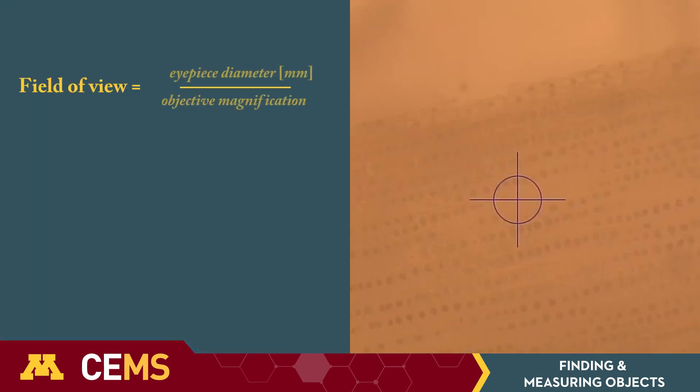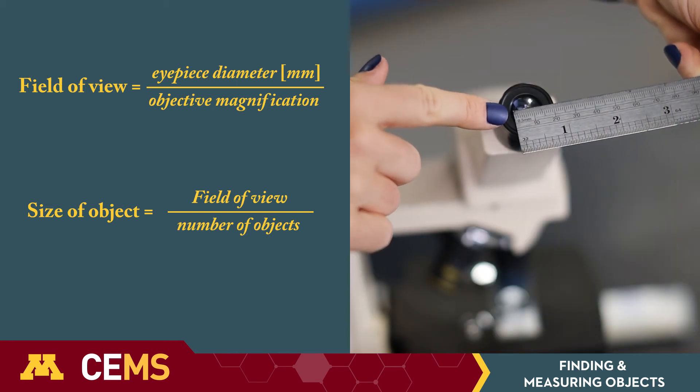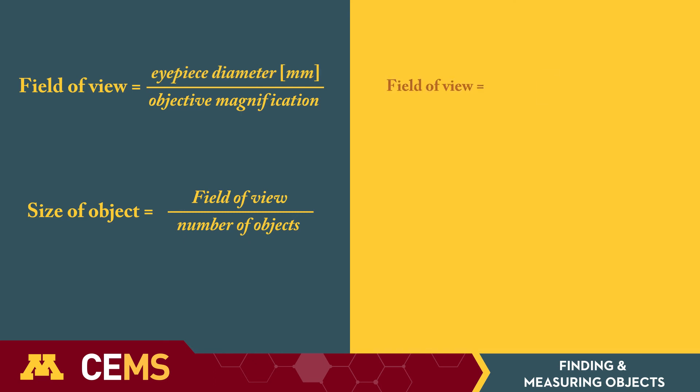For example, here I have some root cells under 40x magnification. The size of the eyepiece is about 15 millimeters, so using this equation we can put in the objective magnification and eyepiece diameter. The field of view is about 0.375 millimeters.